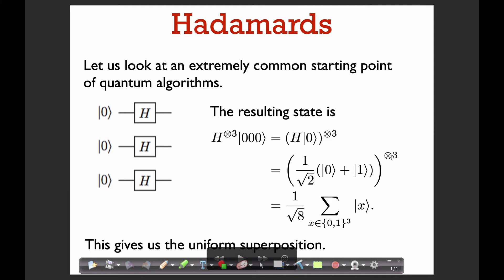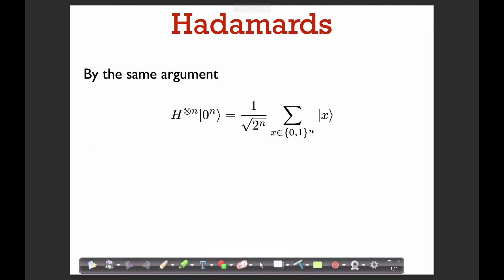We have this tensor product with itself three times. When you expand this, you're going to get every possible combination of zero and one — a sum over all three-bit strings of |x⟩, with coefficient one over root two cubed. Basically what we get is a uniform superposition over all three-bit strings. You can easily generalize this to an n-qubit state: when you apply the n-fold tensor product of the Hadamard to an n-qubit |0⟩ state, you get a uniform superposition over all n-bit strings.